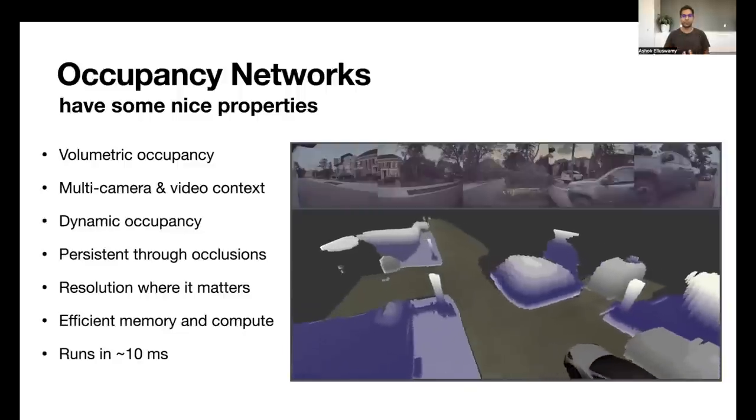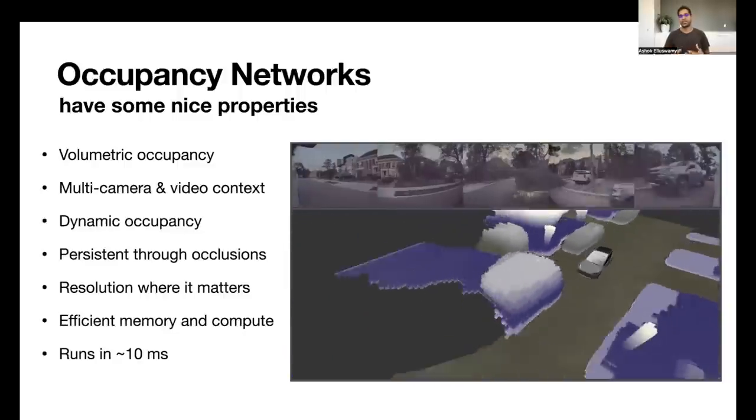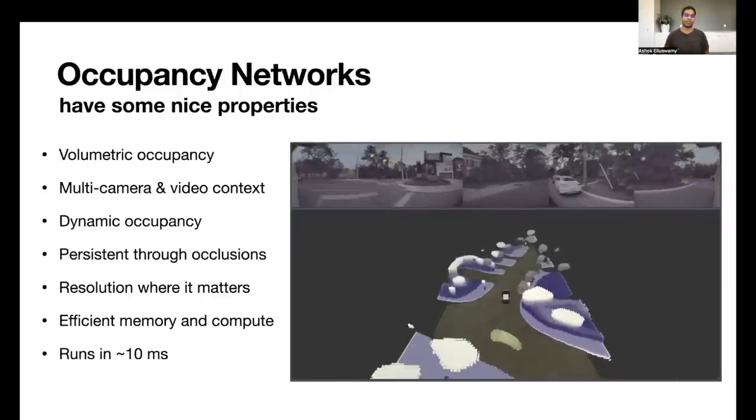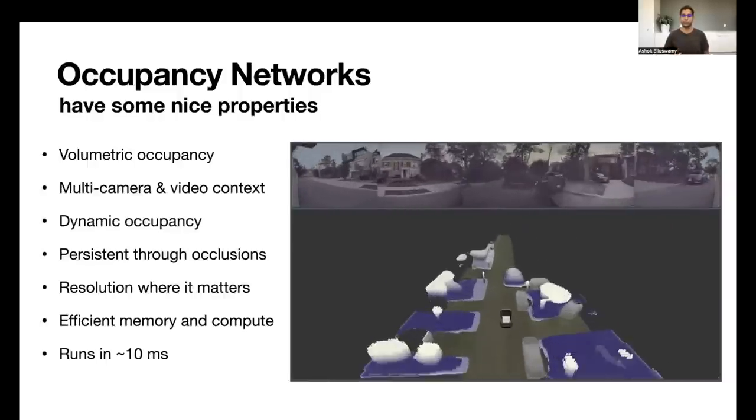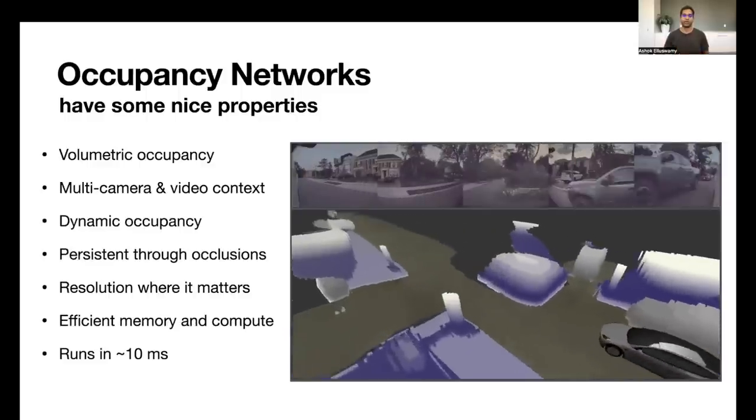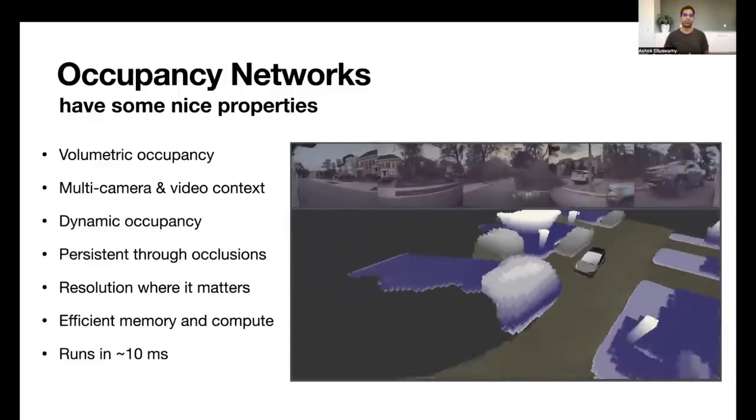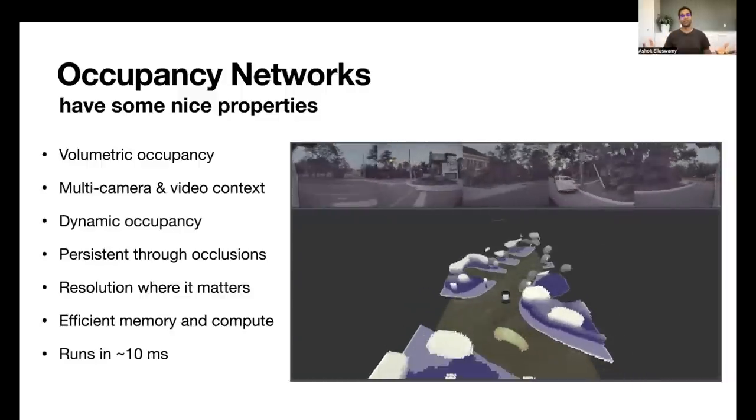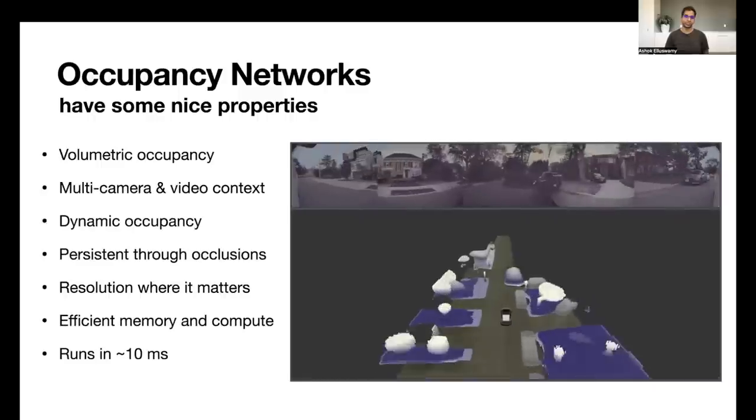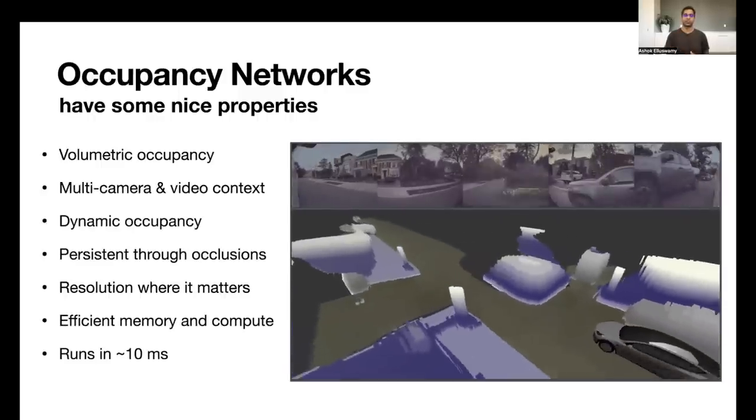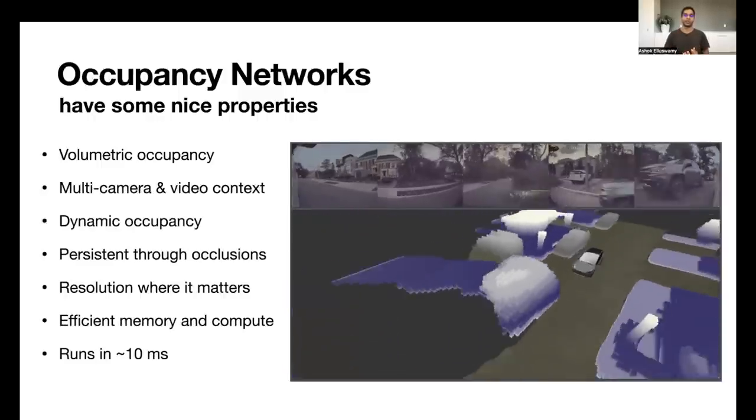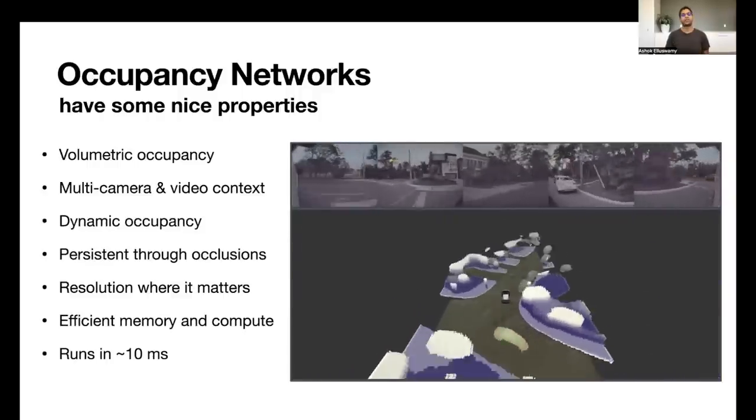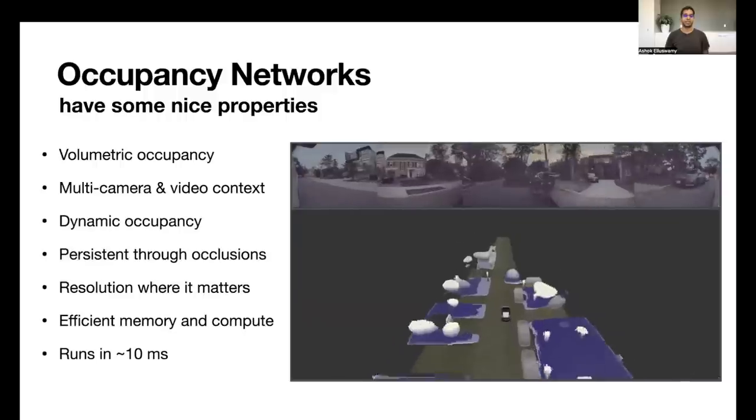These networks produce both static occupancy like walls and trees and things like those, and also dynamic occupancy of things that are from moving objects, such as vehicles for the most part. But sometimes there can also be other obstacles that are moving, such as debris on the road. Since the output space is directly in 3D, we can predict things through occlusions. So you can predict there's the presence of a curb, even though a car might occlude it instantaneously.